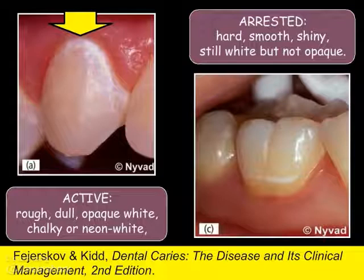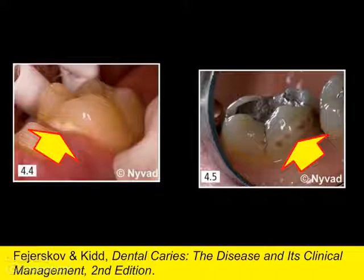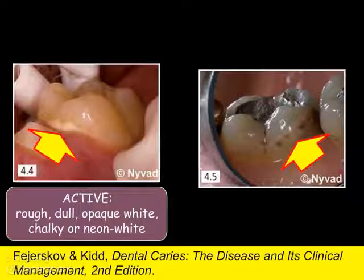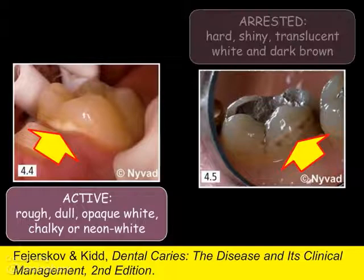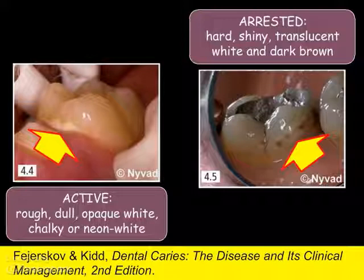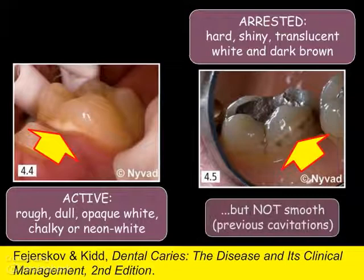Here are two very different lesions. On the left, this active lesion would be rough, dull, and the color is opaque white, chalky white, or neon white — and it's right up against the gingival tissue. On the right, this arrested lesion would be hard, shiny, and its color is translucent white and dark brown. Also, the lesion is far away from the soft tissue. The one exception is that the surface is not smooth — those brown spots are actually tiny cavitations. Those don't fill in when the lesion stops progressing; you can't get that enamel back. So if you were to feel the lesion, it would feel hard but not smooth — those scars would make the surface feel rough.